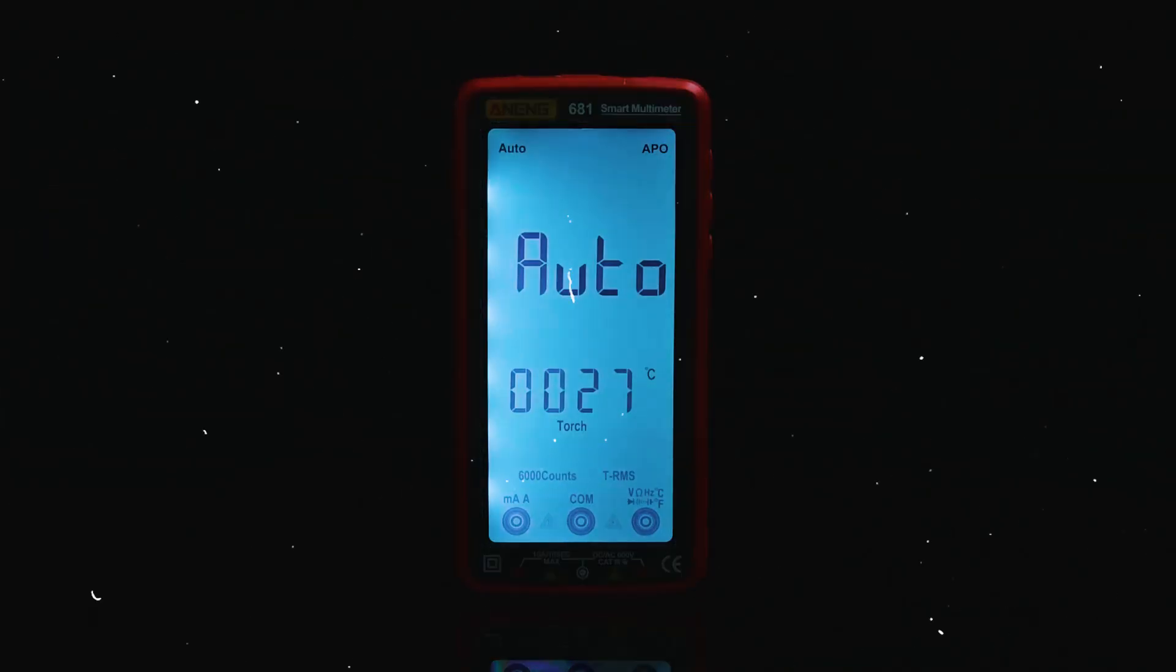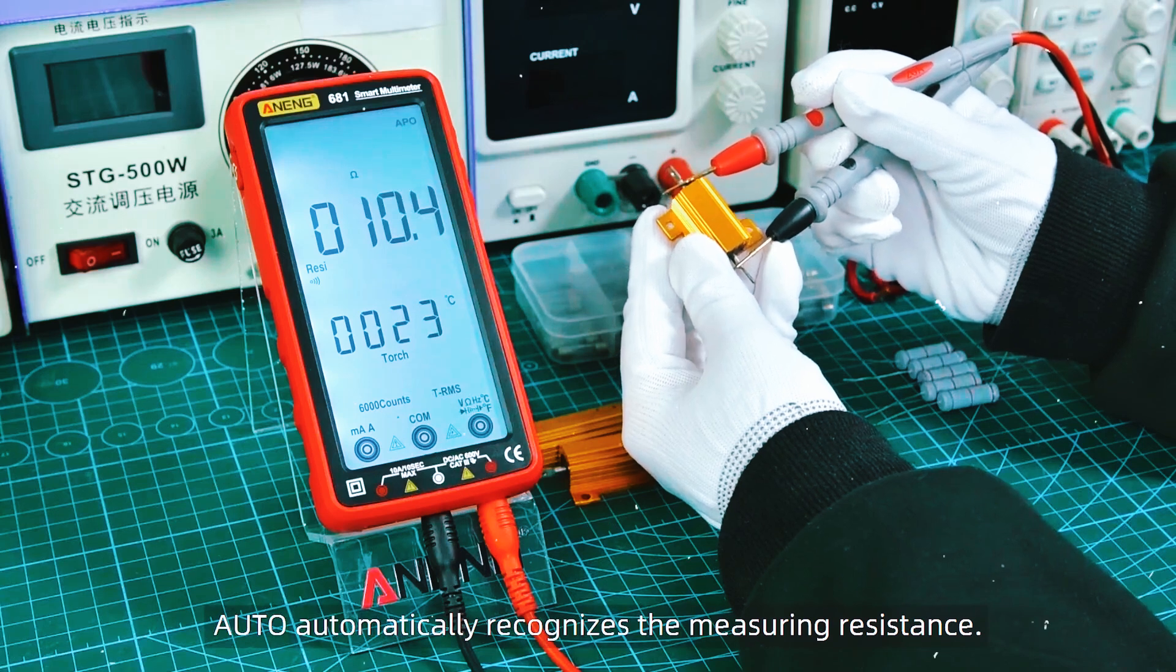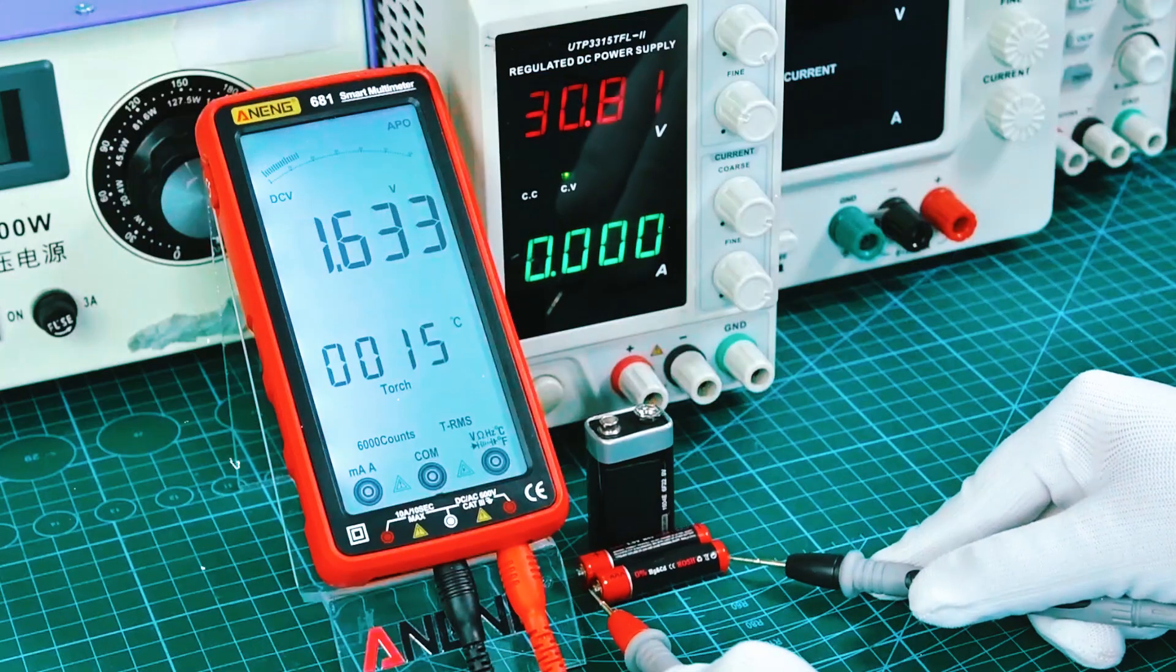Another huge plus for digital meters is their auto-ranging feature. This means you don't have to manually adjust the meter to match the range of what you're measuring. The meter will do it for you.